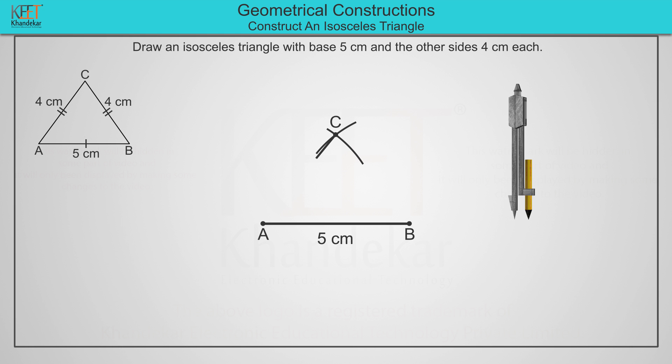Join point C and point A. Also join point C and point B. Triangle ABC on the screen is the isosceles triangle.